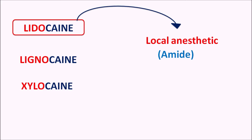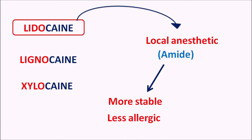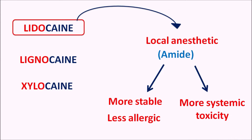Local anesthetics are of two types: either amide derivatives or ester derivatives. Lidocaine is an amide derivative. Because of the amide linkage, this drug is more stable as well as less allergic compared with the ester derivatives. But at the same time this drug has more systemic toxicity. So if this drug is given accidentally into the systemic circulation, or when it is locally applied and significantly absorbed, we can see systemic toxicity. That's why lidocaine is intended for local action only.